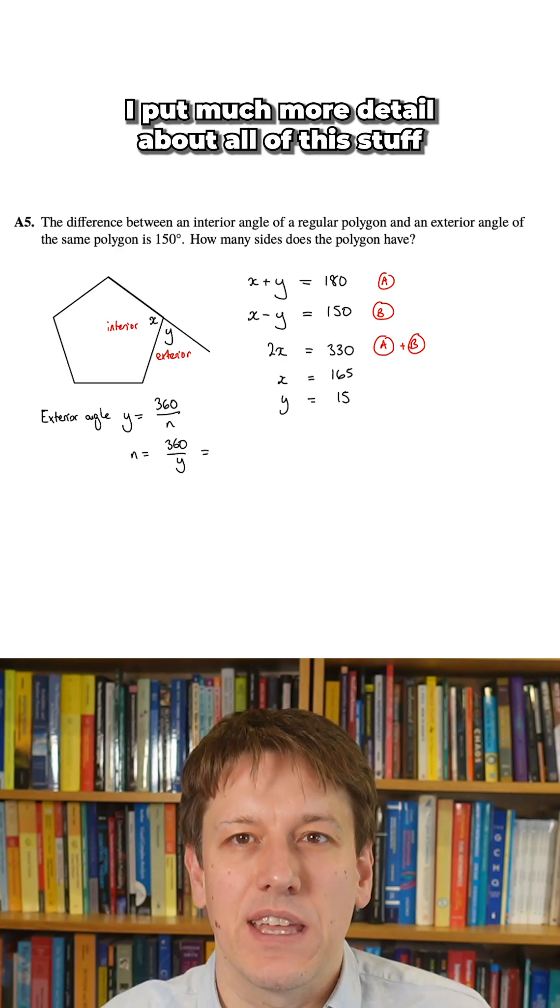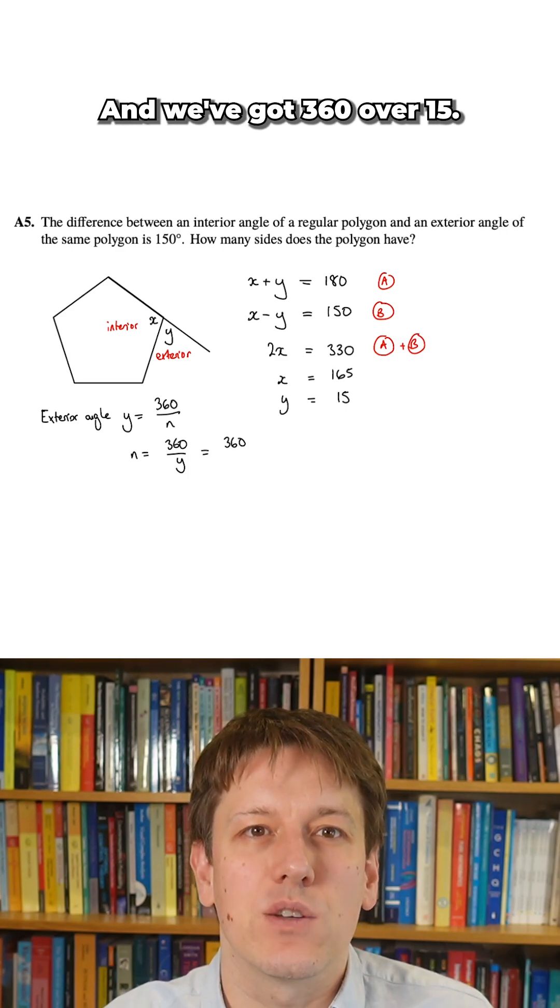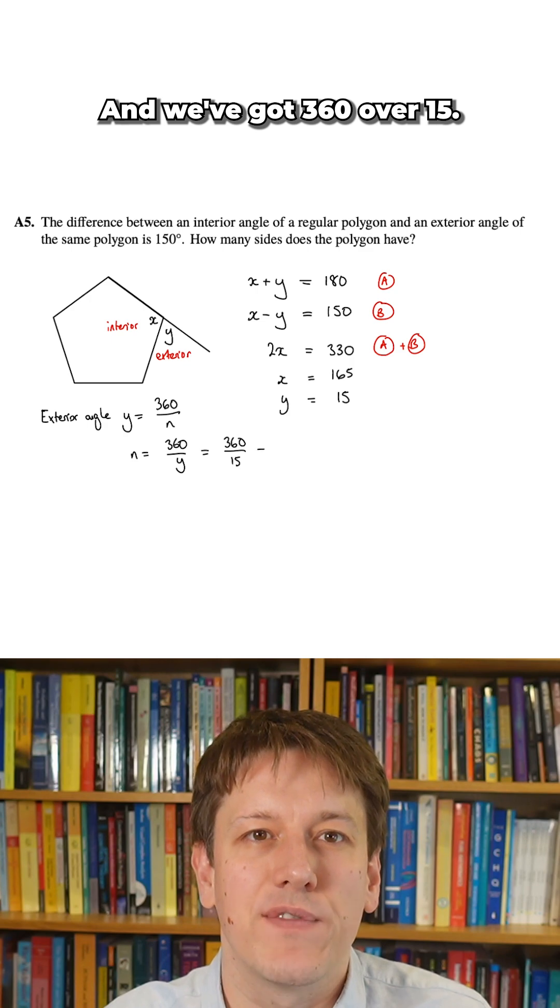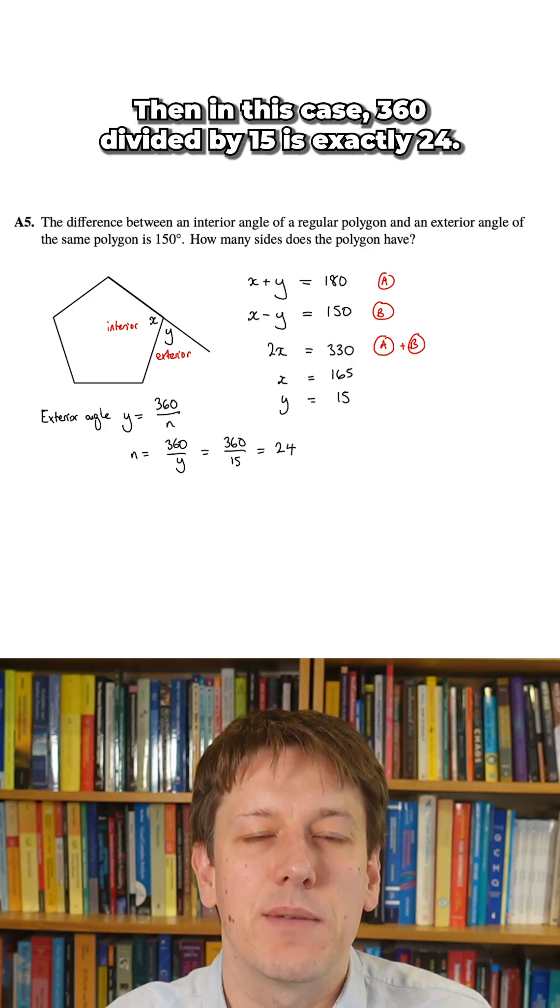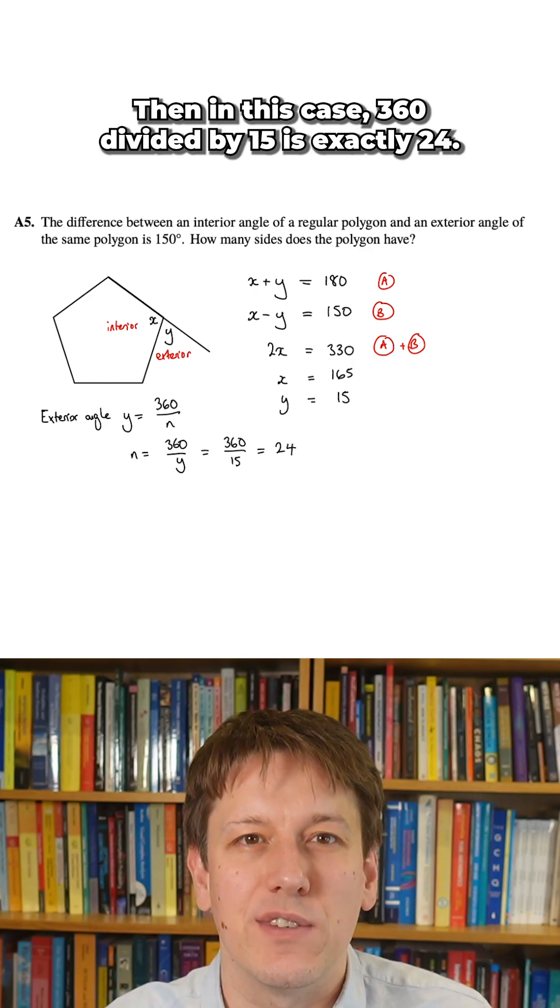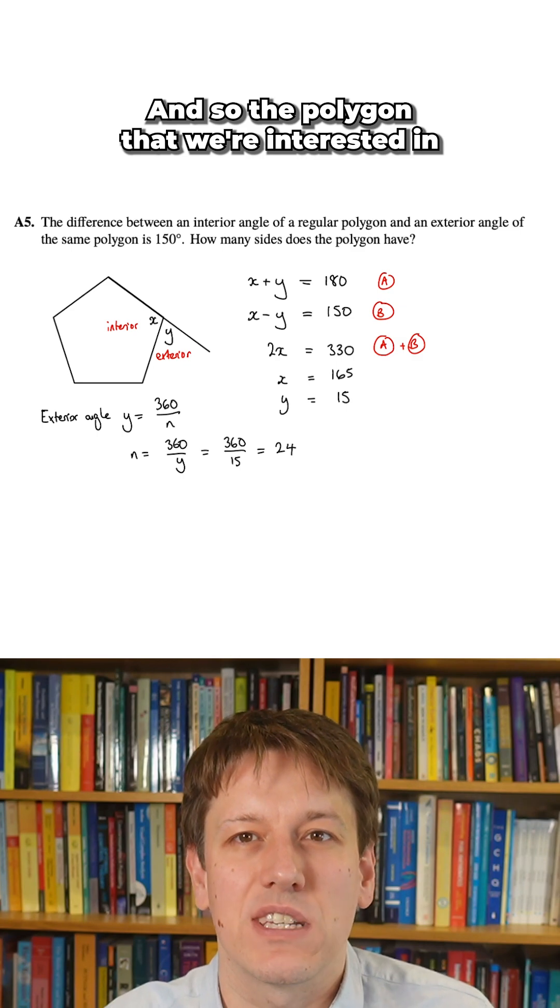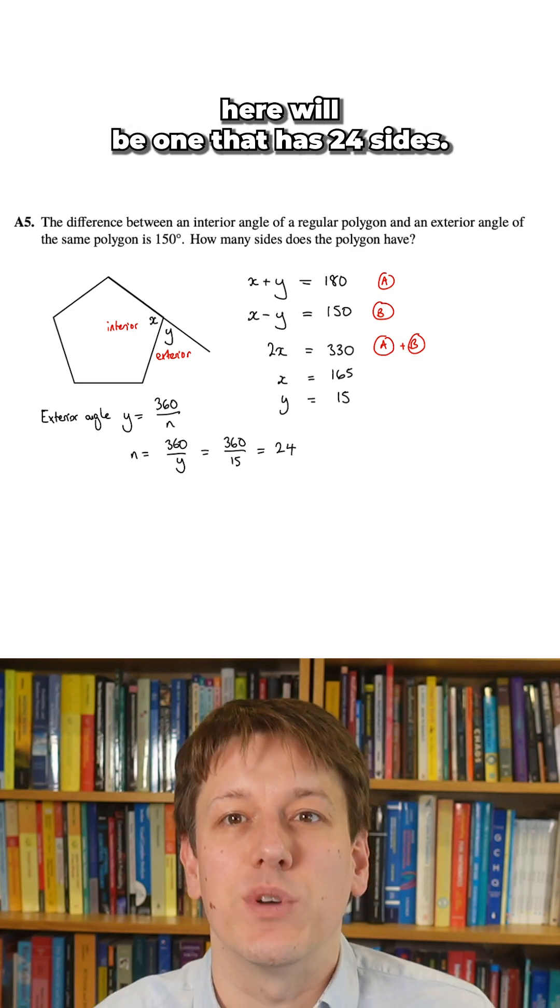Much more detail about all of this stuff in the online courses, of course, and we've got 360 over 15. Then in this case, 360 divided by 15 is exactly 24. And so the polygon that we're interested in here will be one that has 24 sides.